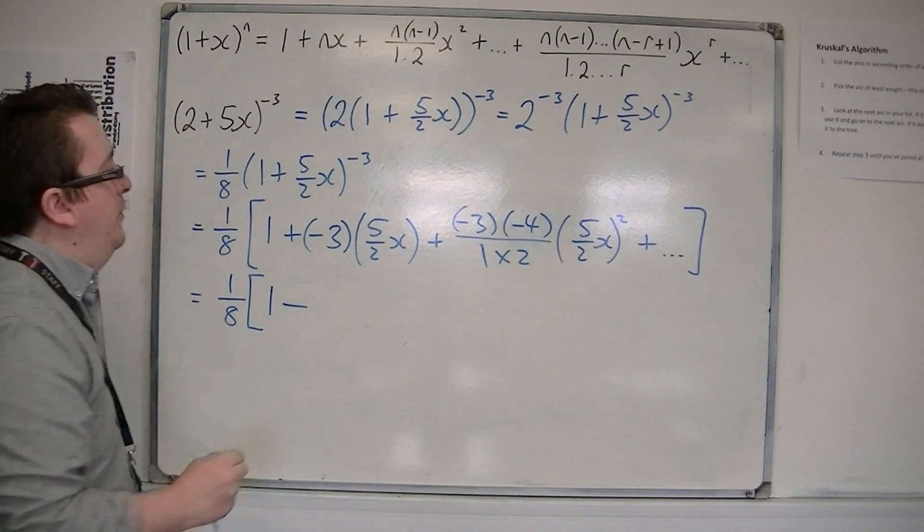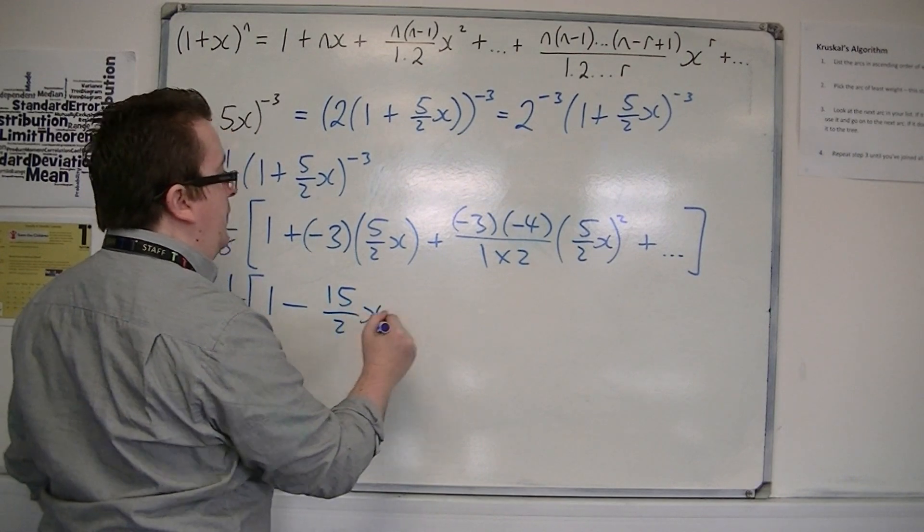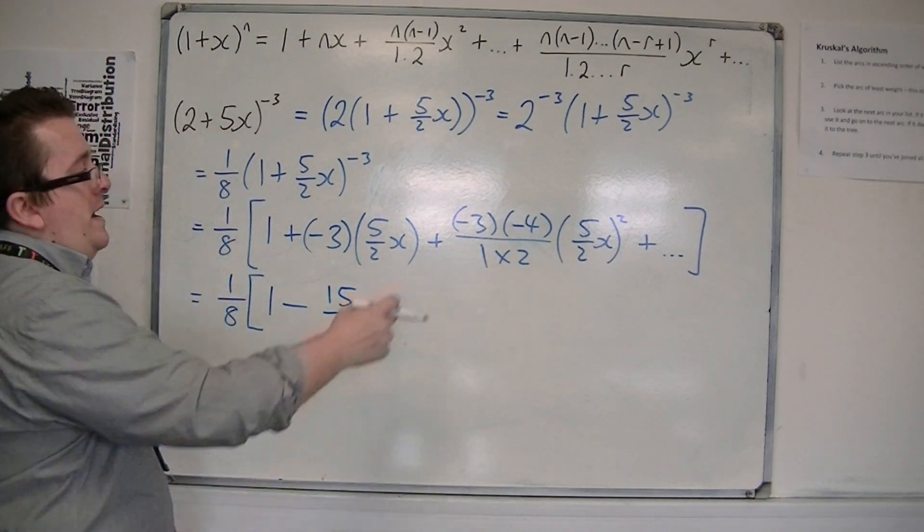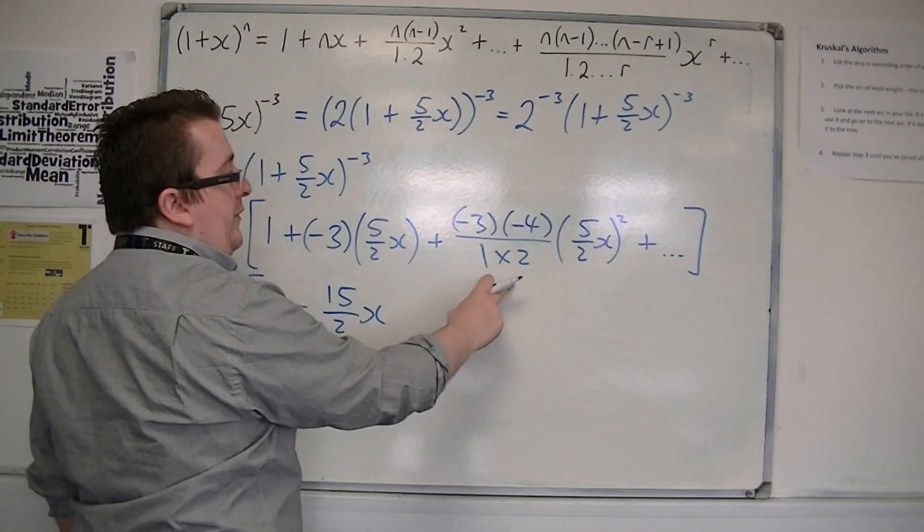So we've got minus 3 times 5/2, so that's minus 15/2 x. And here we've got minus 3 times 4, so that's 12, over 2, so that's 6.